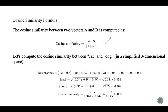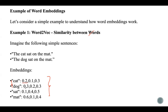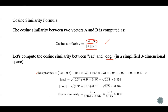Cosine similarity between two vectors A and B can be computed using the formula: A·B divided by the product of the magnitudes of A and B, where A·B is the dot product of the vectors and the denominators are the magnitudes. To compute cosine similarity between 'cat' and 'dog' in a simplified three-dimensional space, we calculate the dot product: 0.2×0.3 + 0.1×0.2 + 0.3×0.3. The magnitude of 'cat' and 'dog' are then computed — for dog we get 0.469 — and finally substituting these values into the formula gives a high cosine similarity value, showing that cat and dog are very similar in meaning.